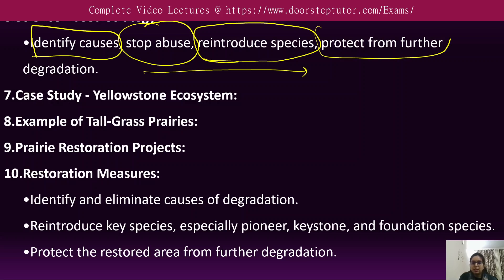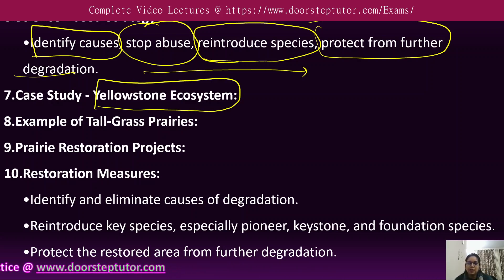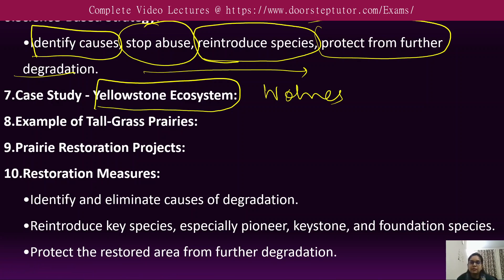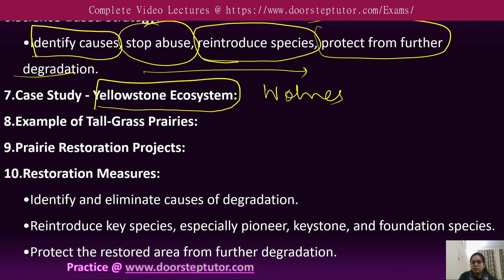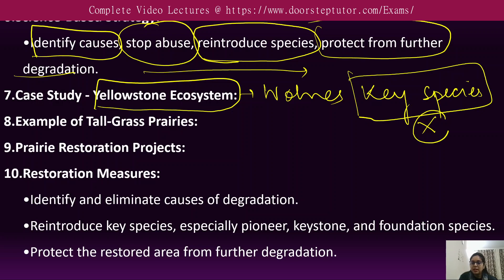The case study of the Yellowstone ecosystem is presented, in which the reintroduction of wolves is illustrated as a very good example of the importance of introducing key species to restore ecological balance. Wolves are considered a keystone species — if that particular species is eliminated from the ecosystem, the whole ecosystem will be destroyed.